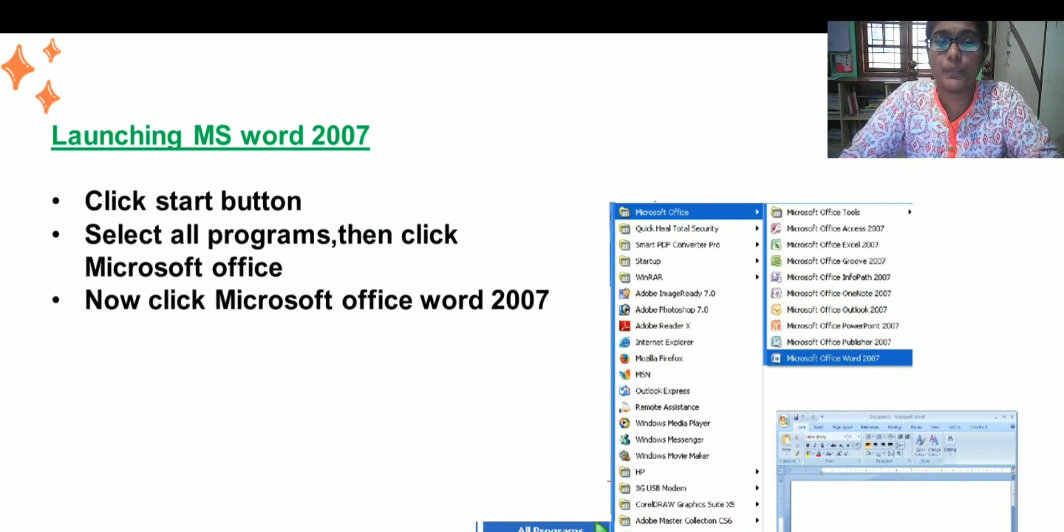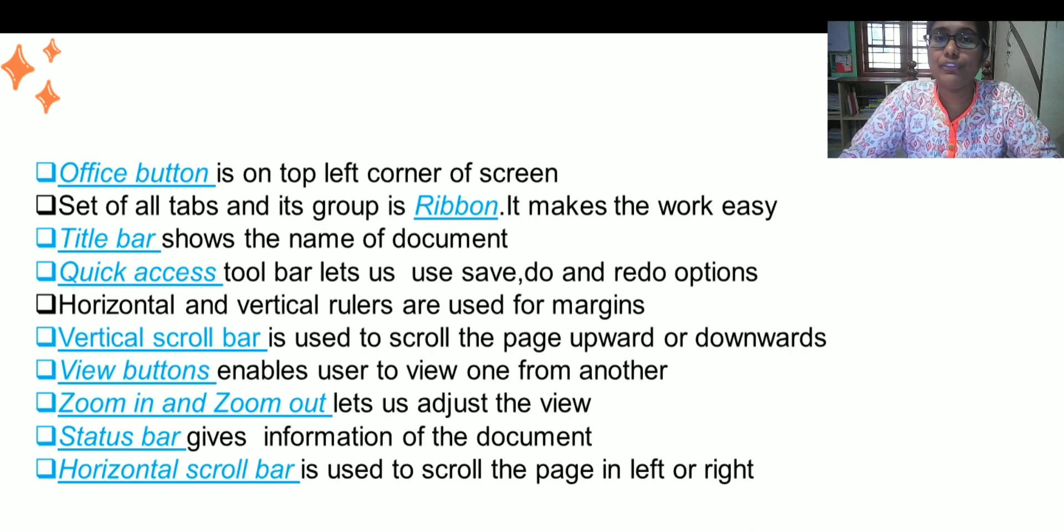This window will be appearing which is the home window of Microsoft Word. Let's learn about some of the options in this application. Those are Office Button, Ribbon, Title Bar, Quick Access Toolbar, Horizontal and Vertical Rulers, Vertical Scroll Bar, Horizontal Scroll Bar, Zoom In, Zoom Out and many.